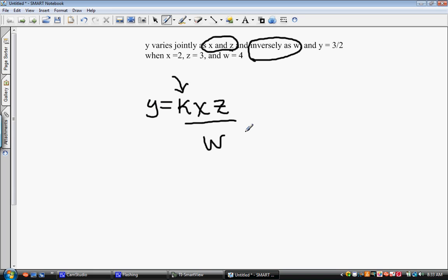Now we will substitute anything we've been given. We're given that it's 3 halves. We're given that x is 2, so we have k times 2 and z times 3 and w is 4. So we have some basic algebra to do. Up on the top we have a 6k and the bottom we still have the 4.